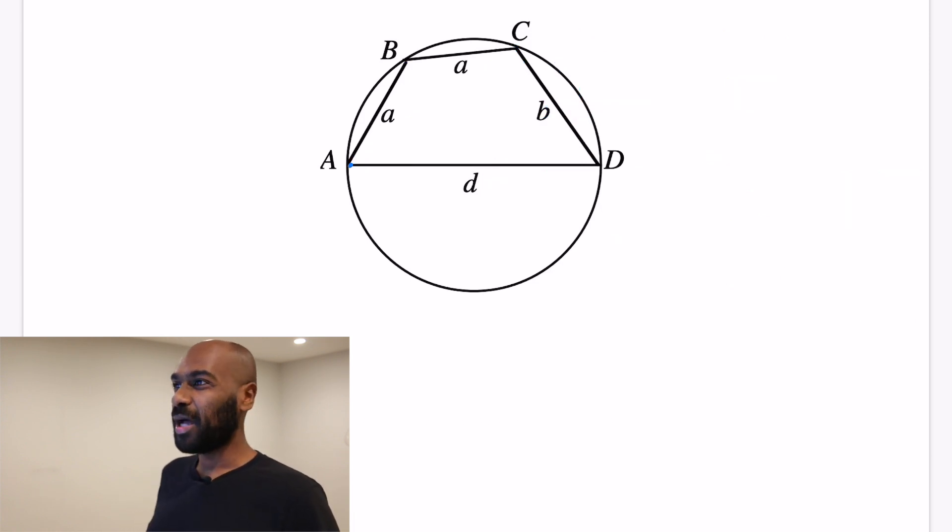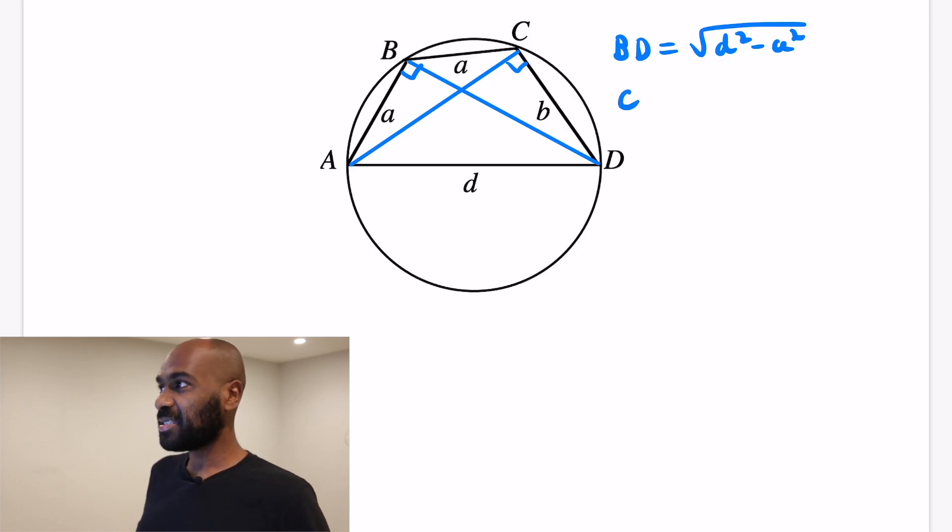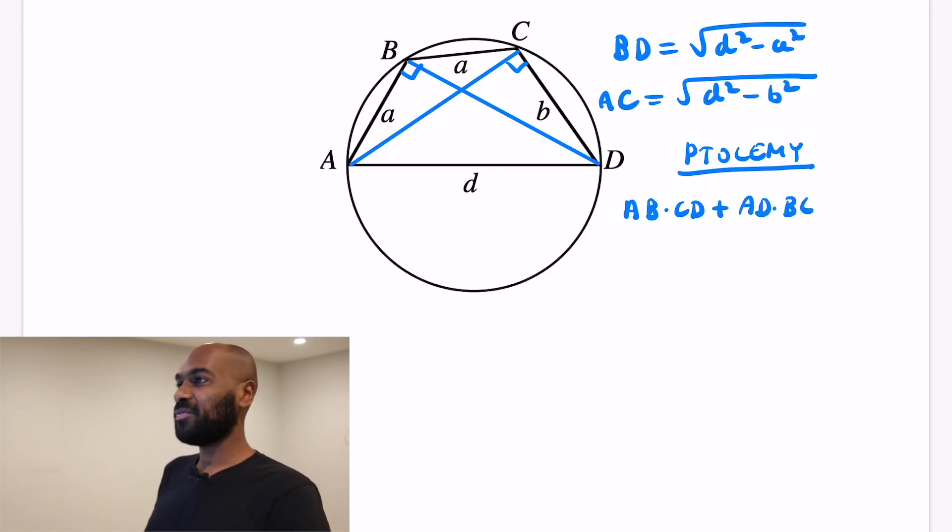So I do want to mention one other way that we could have gotten this, which is by drawing both the diagonals, AC and BD. And we know that they form right angles because AD is a diameter. So BD itself then is the square root of d squared minus a squared. And AC itself is, by a similar light, the square root of d squared minus b squared. Now there's this really interesting, cool theorem about cyclic quadrilaterals, called Ptolemy's theorem, which actually relates the side lengths to the diagonals of the quadrilateral. And it says the following, if we have the cyclic quadrilateral like we do, then AB times CD, the opposite sides, plus the sum of the products of the other opposite sides, AD and BC, is AC times BD, the product of the diagonals. And if you want to see a proof of this, I actually have a proof in a different video, linked right over here.